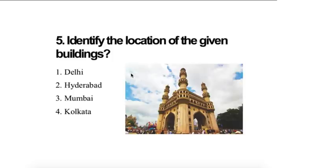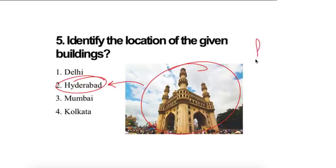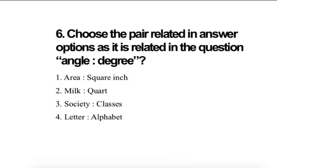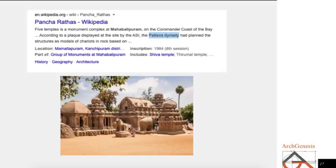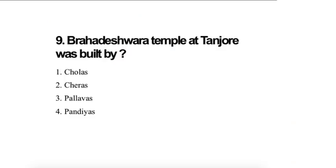So Sikkim ki capital Gangtok hai, so Manipur ki Imphal. The velocity of the wind is related to pressure gradient, high pressure to low pressure. The wind flows from high pressure to low pressure. Identify the location of the given building. This is Charminar and it is located in Hyderabad. The right answer is Salar Jung Museum. Choose the pair related in answer options. The right option will be the square meter which is a measurement of the area. Rathas in Mahabalipuram was constructed in the period of Pallava dynasty. Brihadeshwara temple at Tanjore was built by Cholas, Raja Raja Chola.